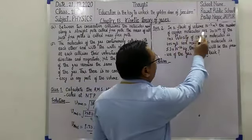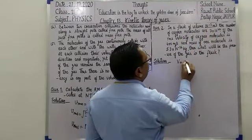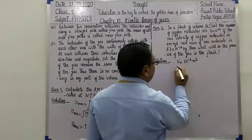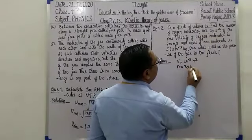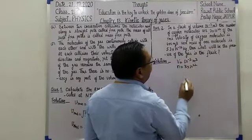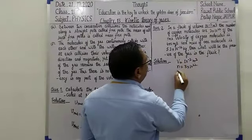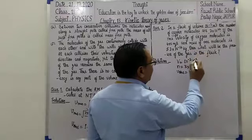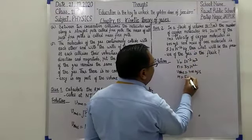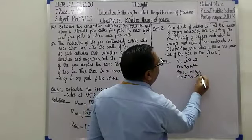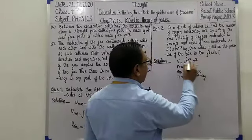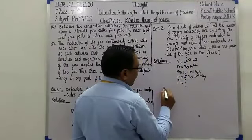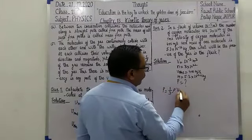Question number two: in a flask of volume 10⁻³ m³, the number of oxygen molecules are 3 × 10²², the root mean square velocity of the oxygen molecules is Vrms = 400 m/s, and mass of one molecule is m = 5.3 × 10⁻²⁶ kg. Then what will be the pressure of the gas? Using kinetic theory of gases, pressure P = (1/3) ρ Vrms².